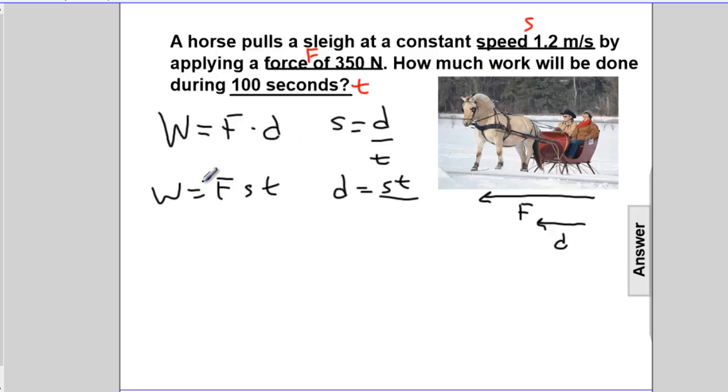We know force, speed, time. We know everything we need to compute the work. So work is force, 350 newtons, times speed, 1.2 meters per second, times the time, 100 seconds.